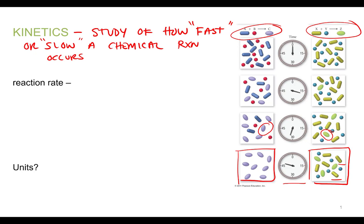So what are we really looking at? We're really looking at the change in amount of the reactants and products. If we wanted to quantify it, we could measure the concentration of the reactants and products and measure that as a function of time. That would give us an idea of how fast or slow a chemical reaction is occurring. When we do that, we call that the reaction rate.